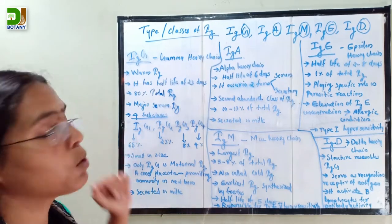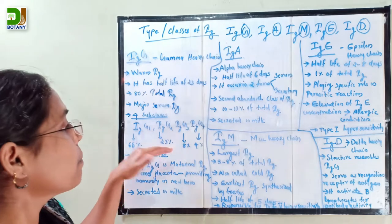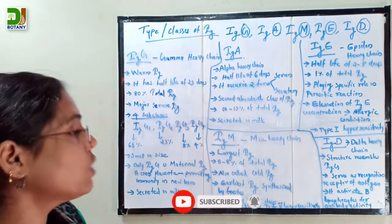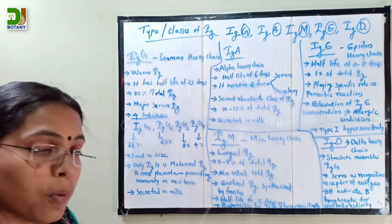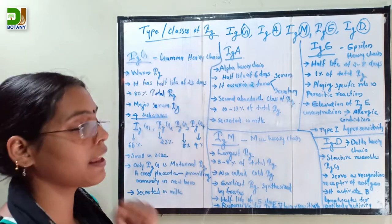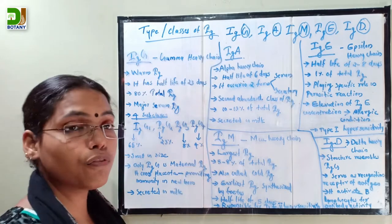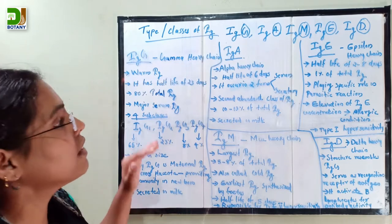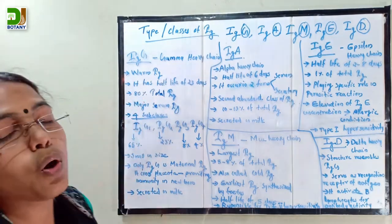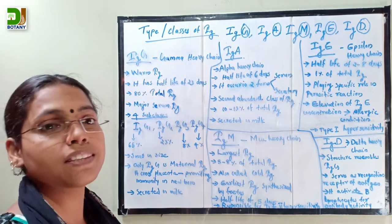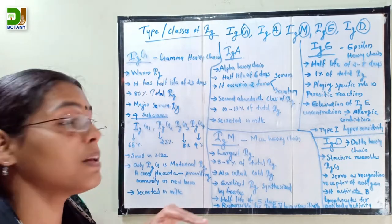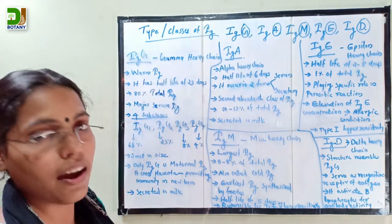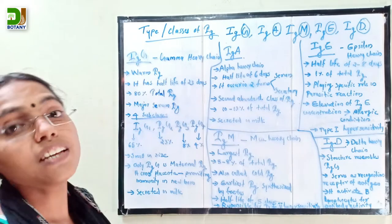65% of immunoglobulin G is IgG1, 8% is IgG3, and 4% is IgG4. The size of immunoglobulin G is very small — it is the smallest immunoglobulin — but it is present in the highest concentration.